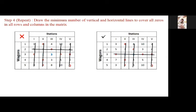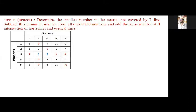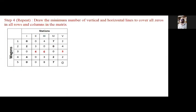We have to repeat the step of covering all zeros until the number of lines equals the number of rows. L is less than N again. Select the minimum number of the uncut elements — it is 3. Subtract 3 from all uncut elements and add it at the intersection points. After doing this, I will again check whether the number of lines equals the number of rows or columns.